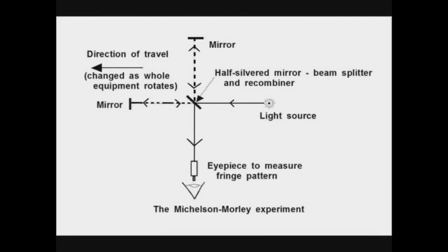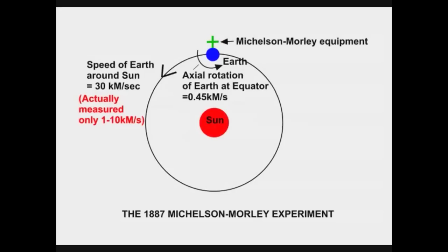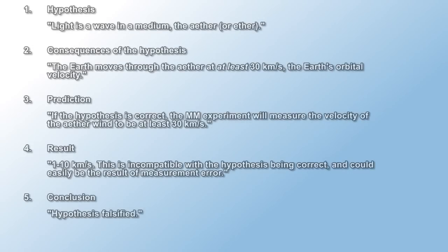Michelson and Morley tried to check the speed of the earth through the ether as it orbited the sun. They're expected to measure a speed of about 30 kilometers per second. To their amazement, there was no movement of this order. They actually measured 1 to 10 kilometers per second. But it was still called a null result.